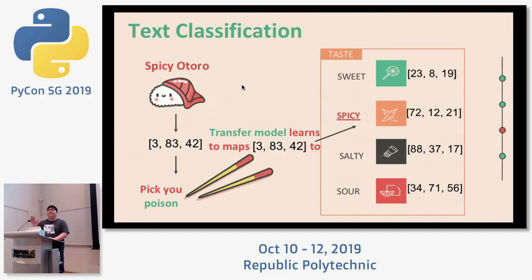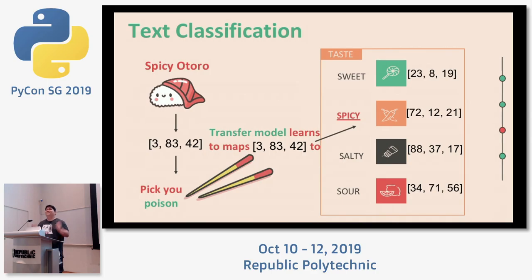Who knows an easier way to solve this? I give you a string 'spicy Otoro', you tell me the label. You could do: string one in string two — yes or no, boolean. String one in string three — yes or no. So 'spicy' in 'spicy Otoro' — yes or no. 'Sweet' in 'sweet Otoro' — yes or no. You get the correct answer. Sometimes that's the solution to do NLP — but not in this talk.